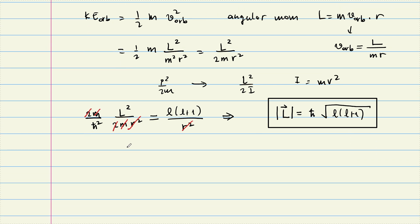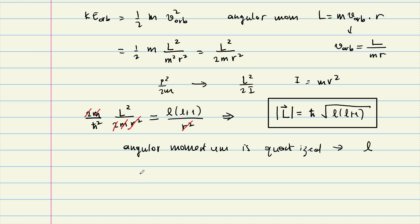So angular momentum is quantized. The magnitude is not simply Lℏ but ℏ√(L(L+1)), and the relevant quantum number is L. This is also consistent with the Bohr derivation from the correspondence principle, where we also found angular momentum in units of ℏ, which equals 1.054 × 10⁻³⁴ joule·seconds — a unit of angular momentum.